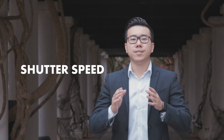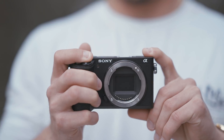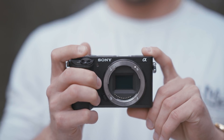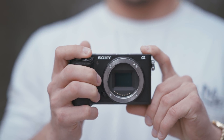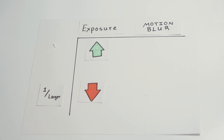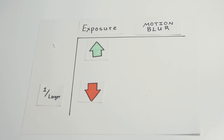Shutter speed is the length of time in which the shutter opens to expose the camera sensor to light before it closes to finish processing the photo. Shutter speed is denoted in fractions of a second, such as one one-thousandth or one four-thousandth of a second. The larger the denominator, the faster the picture is being taken and the less light is exposed to the sensor. The smaller the denominator, the slower it's taking the picture, exposing the sensor for a longer time and letting in more light.